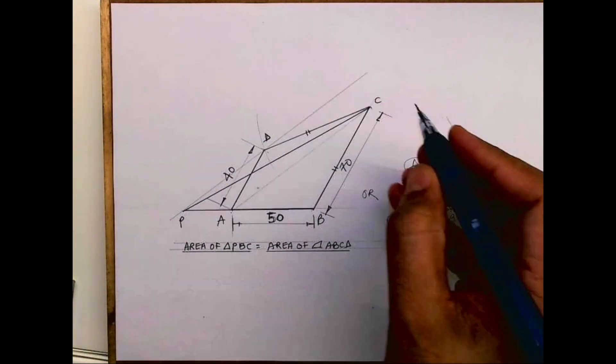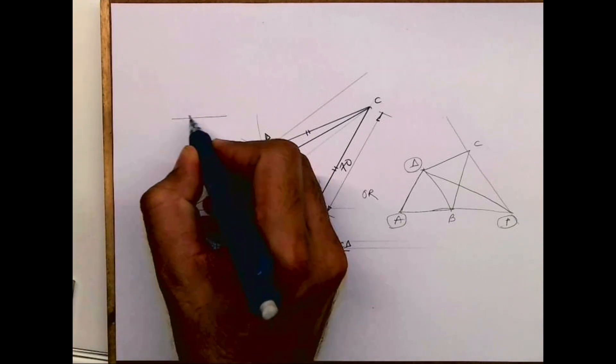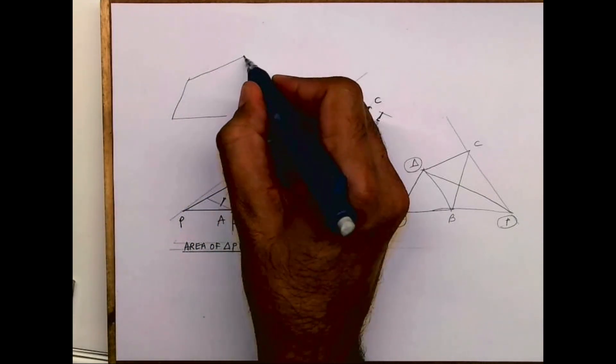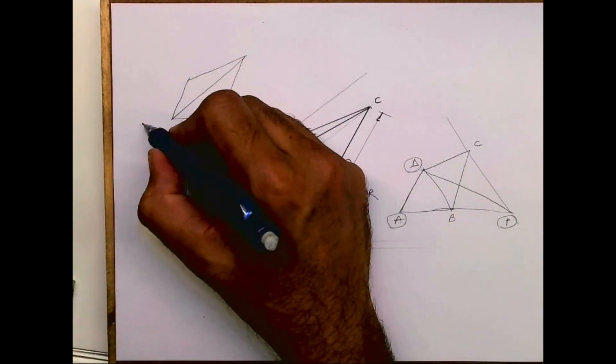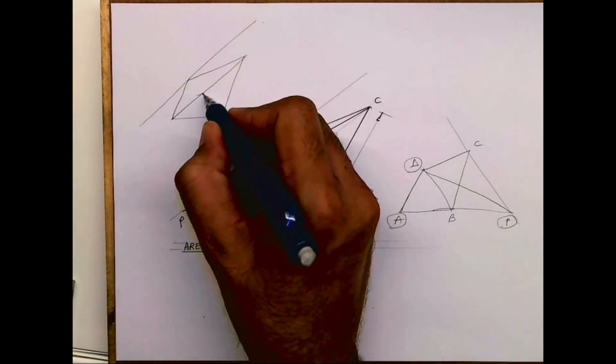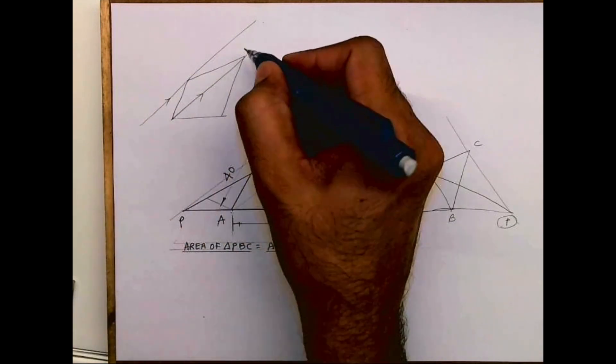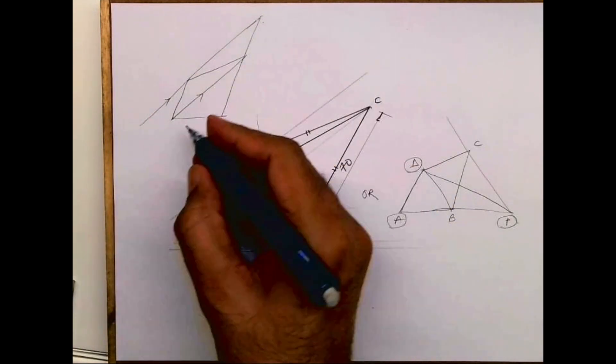Instead of this one, there is one more way where I can draw the quadrilateral. Now, instead of down, I can draw it up like this. I'll draw a parallel line, I'll extend this line wherever it will cut.